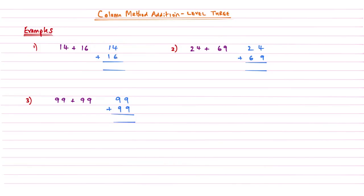So 4 and 6 — we know that the sum of 4 and 6 is 10, so what we're going to do is write a little 1 there and then write the 0 of the 10 underneath that first column. Then we move on to the second column: 1 add 1 is 2, but then we need to add on this 1 that has been carried over to the next column. So 1 add 1 is 2, add this 1 gives me an answer of 3. It pays to leave a little gap between each digit in your columns so you've got space to write the numbers you might need to carry.